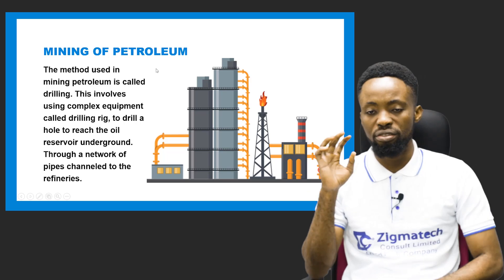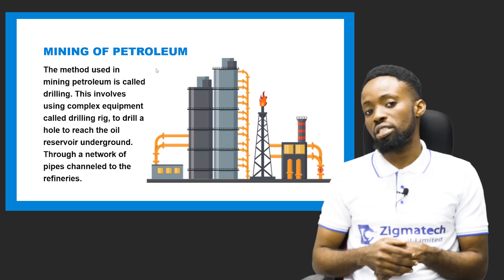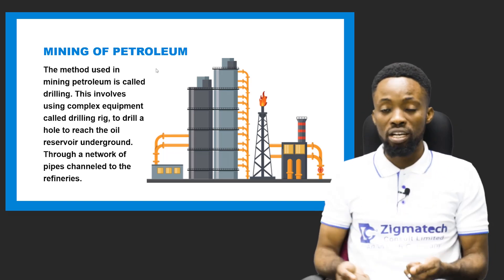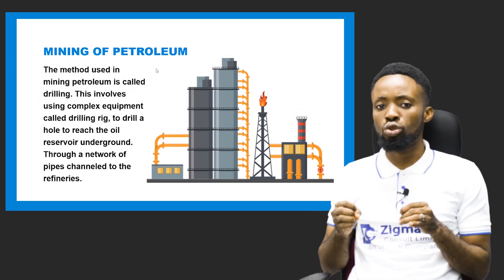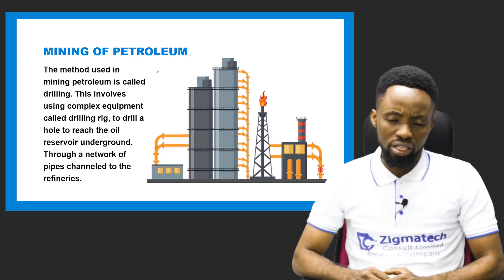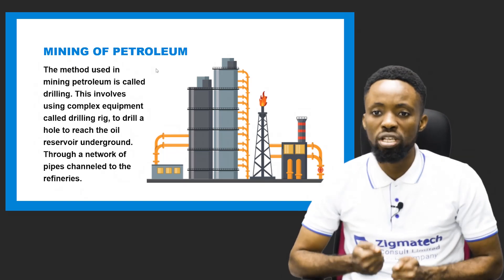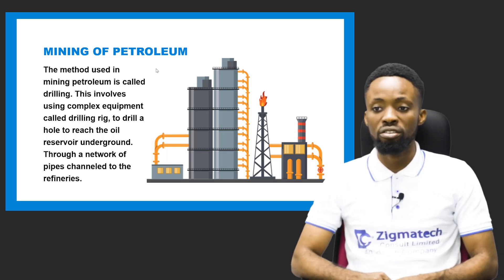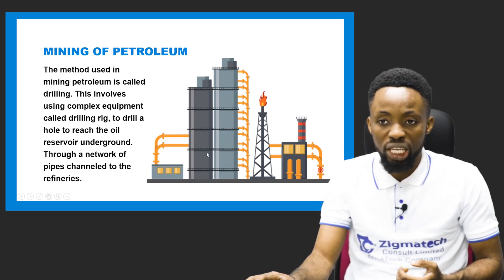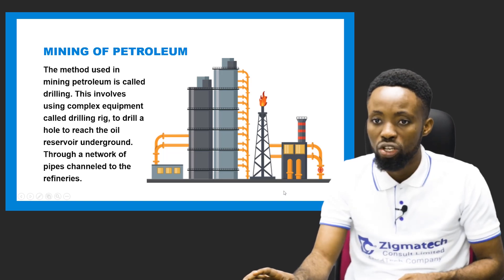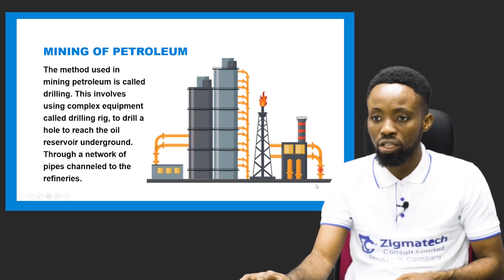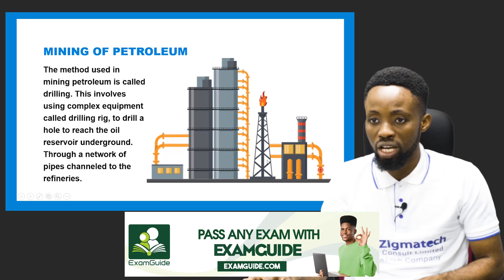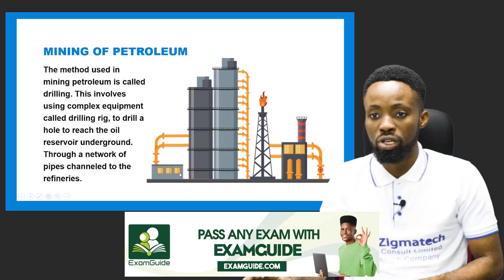In the refinery, we have what is called the fractionating tower. Petroleum is first drilled from the earth via drilling, using complex equipment. They drill out this oil from the ground through a hole down to a reservoir where it can be channeled to the refineries. A good illustration of what the mining looks like is shown on the screen — petroleum being drilled and channeled to the refineries. You can see the petroleum tower, the flaring of gas, and a petroleum station.